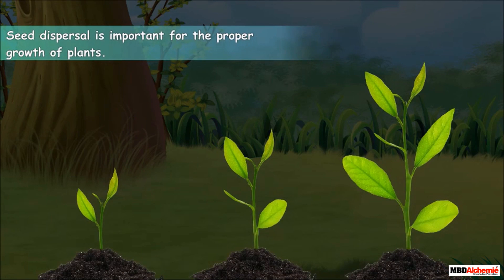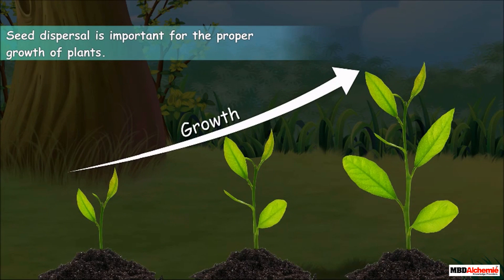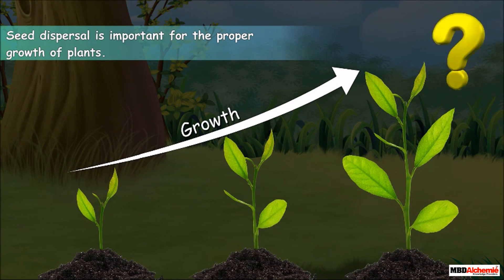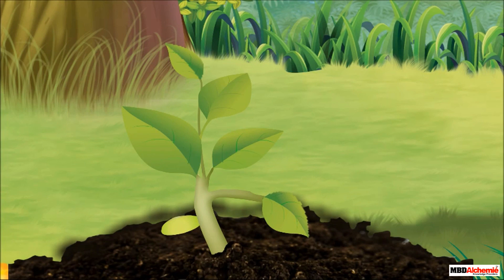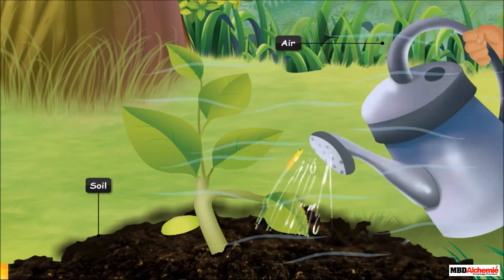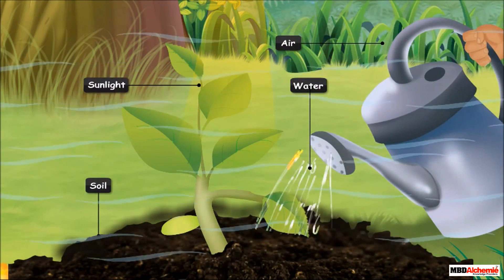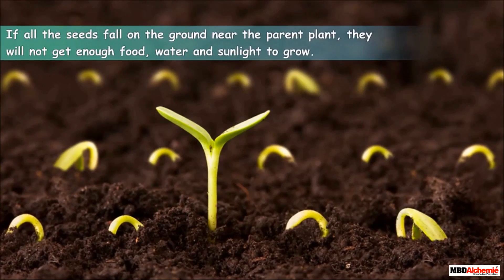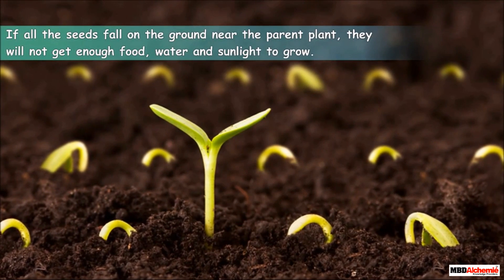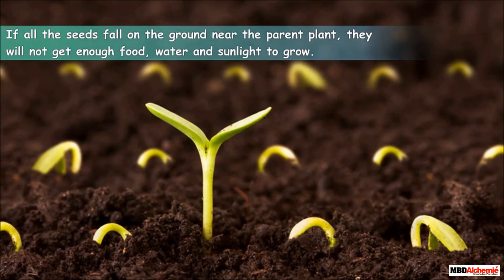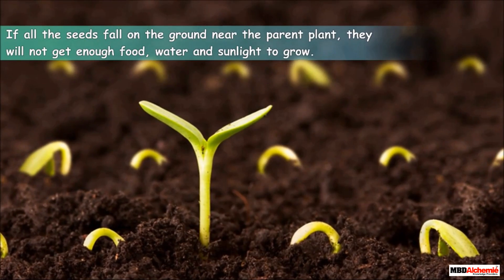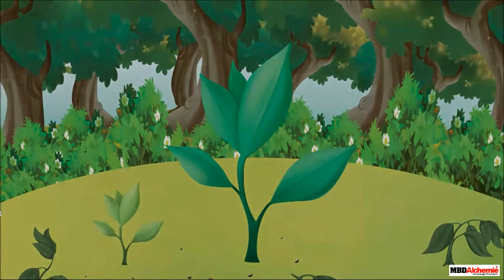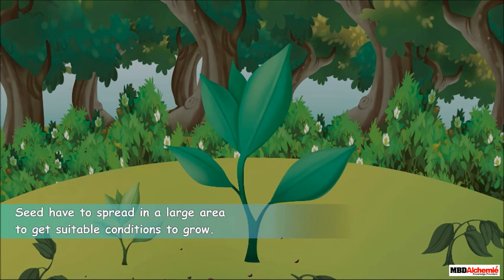Seed dispersal is important for the proper growth of plants. Do you know why? Seeds need suitable conditions of soil, air, water and sunlight to grow. If all the seeds fall on the ground near the parent plant, they will not get enough food, water and sunlight to grow. So seeds have to spread in a large area to grow well.